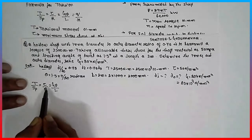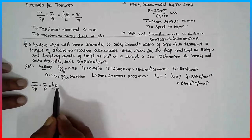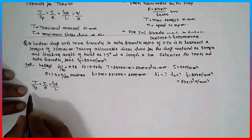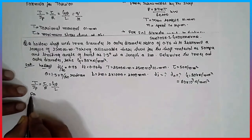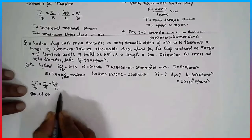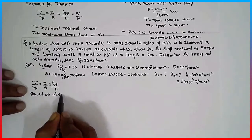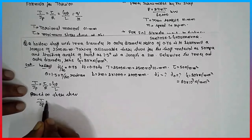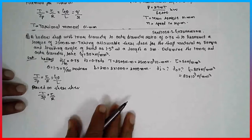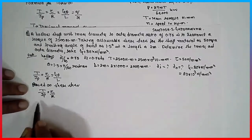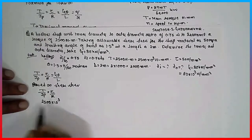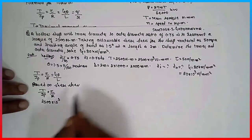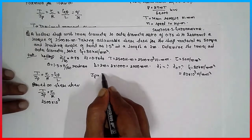Based upon the shear stress, we find the diameter one way; based on the twist, we find it another way. Based on shear stress: T divided by Jp equals tau divided by R. The T value is 2500 × 10³.